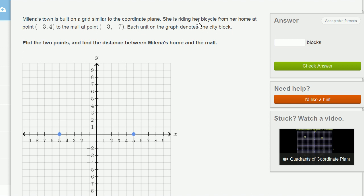So let's see, they tell her she's riding her bicycle from her home at the point negative 3, comma 4. So let's plot negative 3, comma 4. I'll use this point right over here. So negative 3 is our x-coordinate. So we're going to go 3 to the left of the origin. 1, 2, 3. That gets us to negative 3.